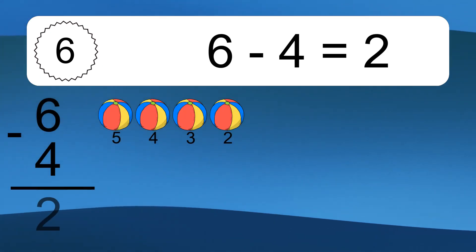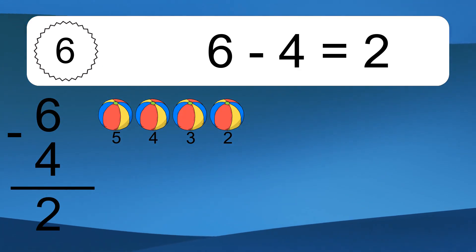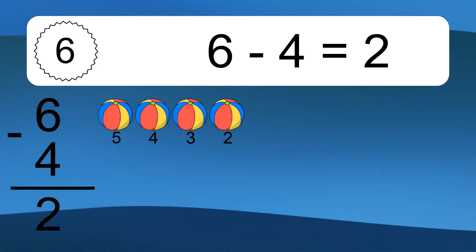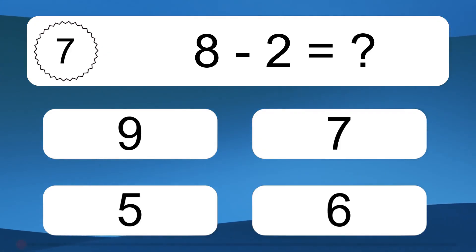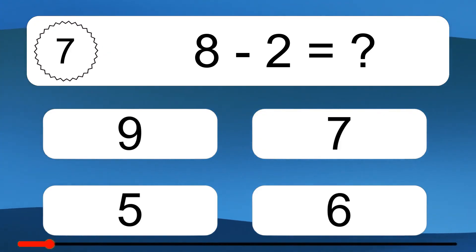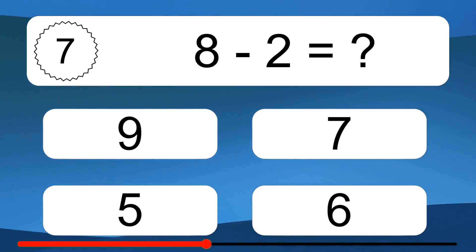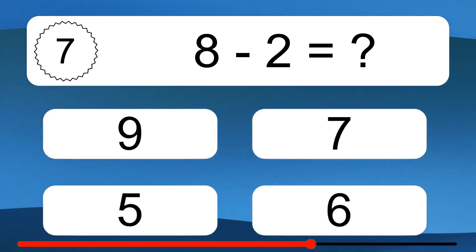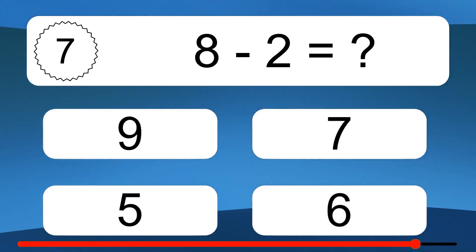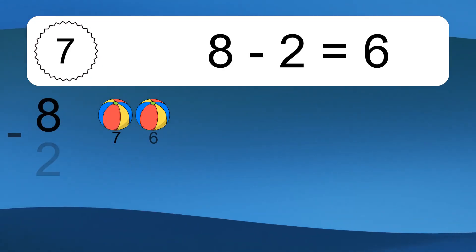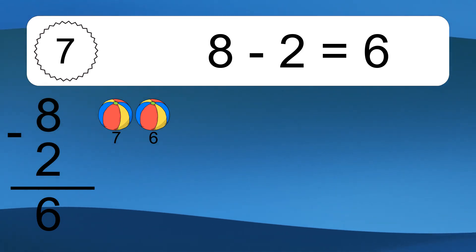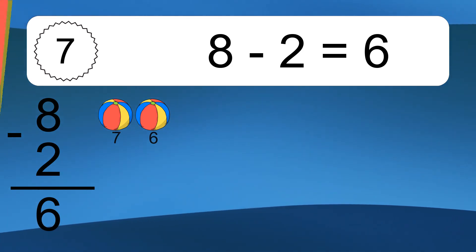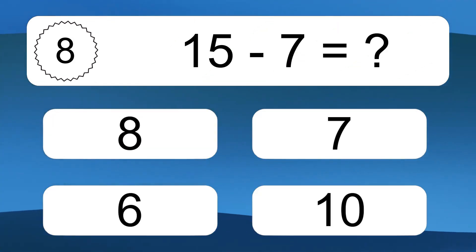6 minus 4 equals 2. Let's count it! 5, 4, 3, 2. 8 minus 2 equals what? 8 minus 2 equals 6. Let's count it! 7, 6.